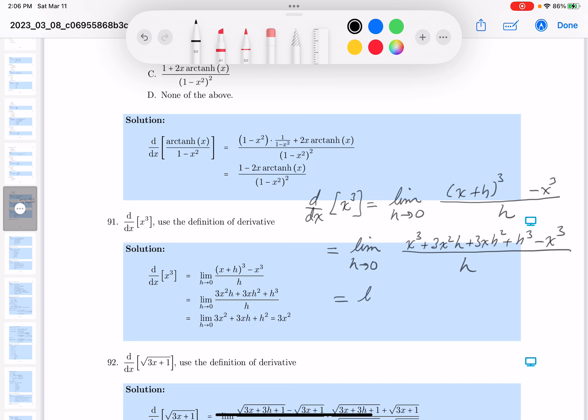I want to continue. This is limit as h goes to zero over h. Let's see, the x cubes disappear. And what are you left with? 3x squared h plus 3xh squared plus h cubed.